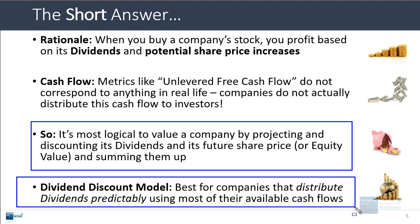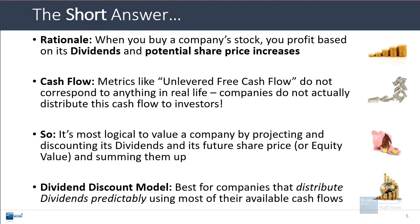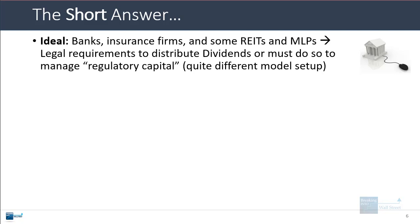The dividend discount model works best for companies that distribute dividends predictably using most of their available cash flows, or at least a significant percentage. It is best for banks and insurance firms — where it's actually the main valuation methodology — and can also be useful for some REITs and some MLPs or master limited partnerships in the oil and gas space.